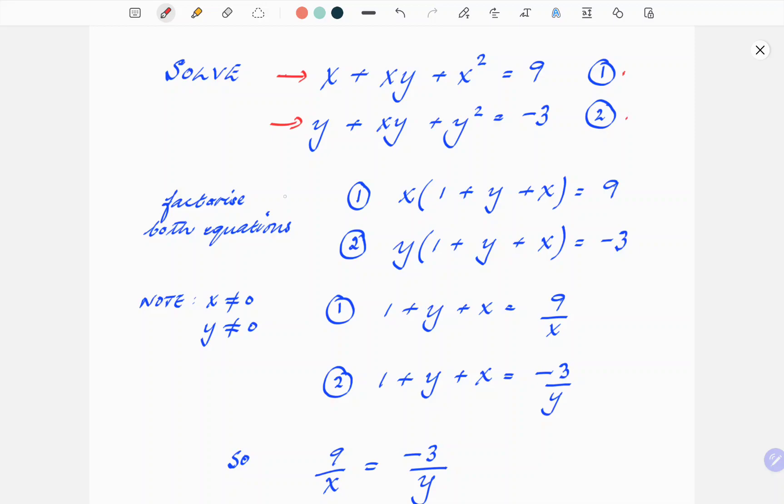First thing we're going to do is factorize both equations. You can see that in the first equation, x is a common factor. And in the second one, it's y. So that gives us this resulting pair of equations. Factorize: x times 1 plus y plus x in brackets, and then y times the same thing in brackets, 1 plus y plus x. So you can see there's a common factor there.